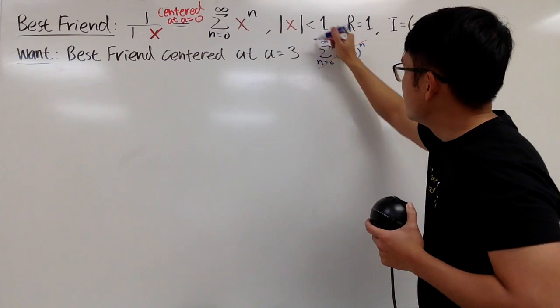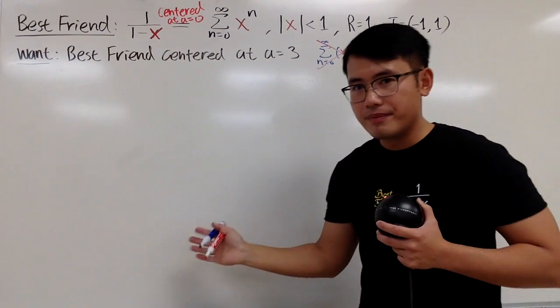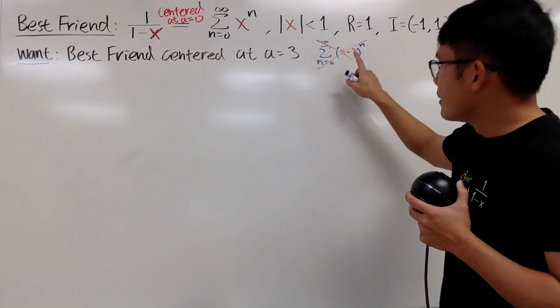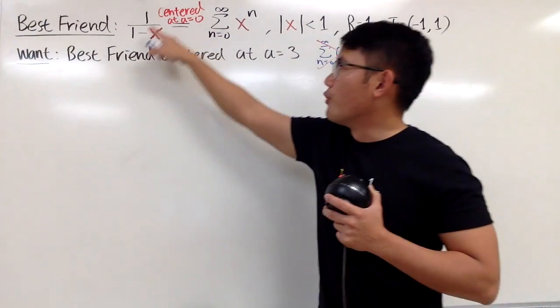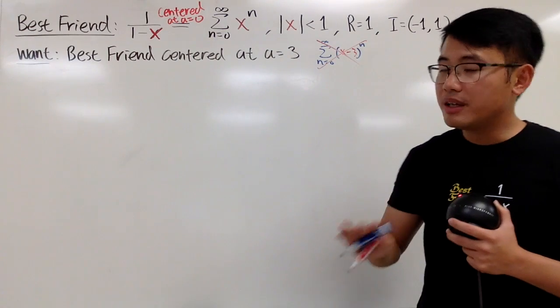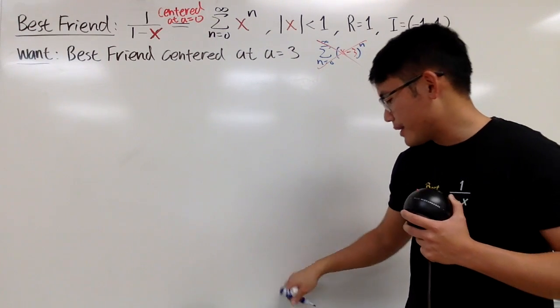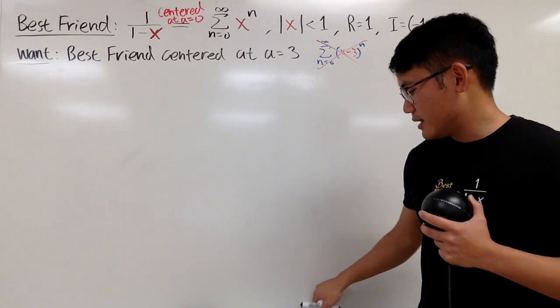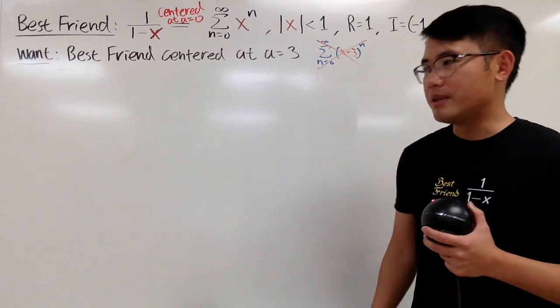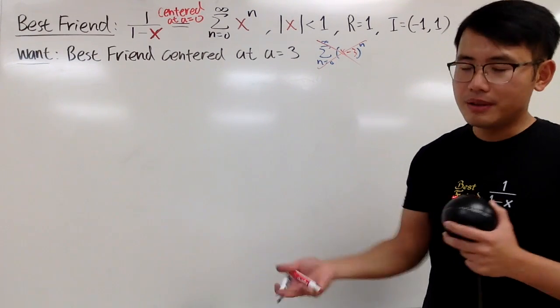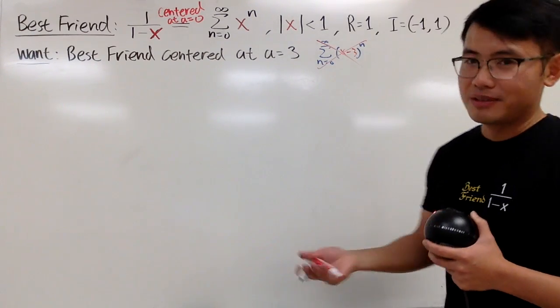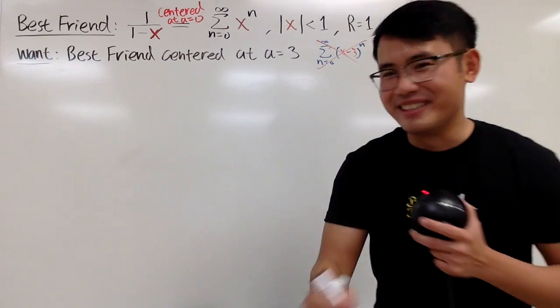This right here, it's not good. This is not the power series expansion for 1 over 1 minus x, centered at x=3. That's not correct. Why? Because, well, I'm not going to say because it's wrong. Well, that's the easy answer. This is not correct because it's wrong, yeah. Circular reasoning.